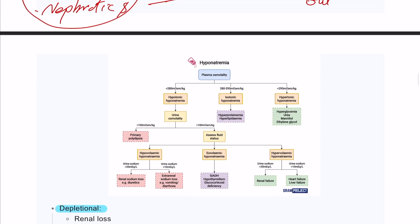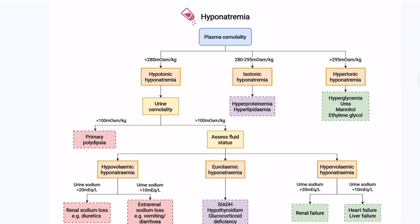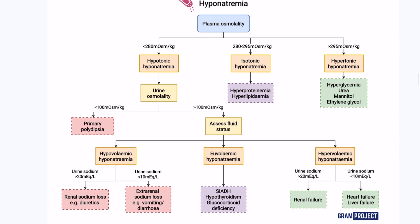For hyponatremia diagnosis, we need to order investigations and assess the patient's fluid status clinically. We start by doing plasma osmolarity. The patient might have hypotonic hyponatremia with very little sodium in a large pool of water, isotonic hyponatremia which is normal at 280, or hypertonic hyponatremia.